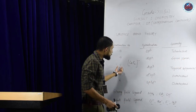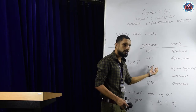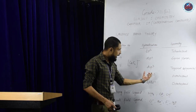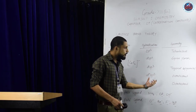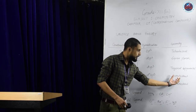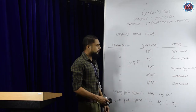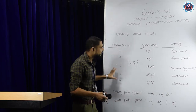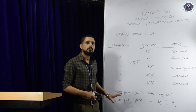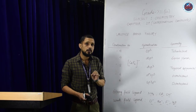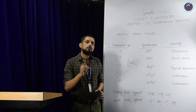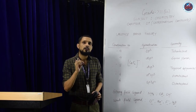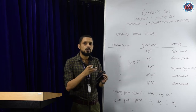If the coordination number is 5, hybridization will be DSP3 and the geometry is trigonal bipyramidal. If the coordination number is 6, we have DSP3 and SP3D2; for both we get the same geometry, that is octahedral. Before you start with this topic, make sure you know this table and know the types of ligands — strong-field and weak-field.